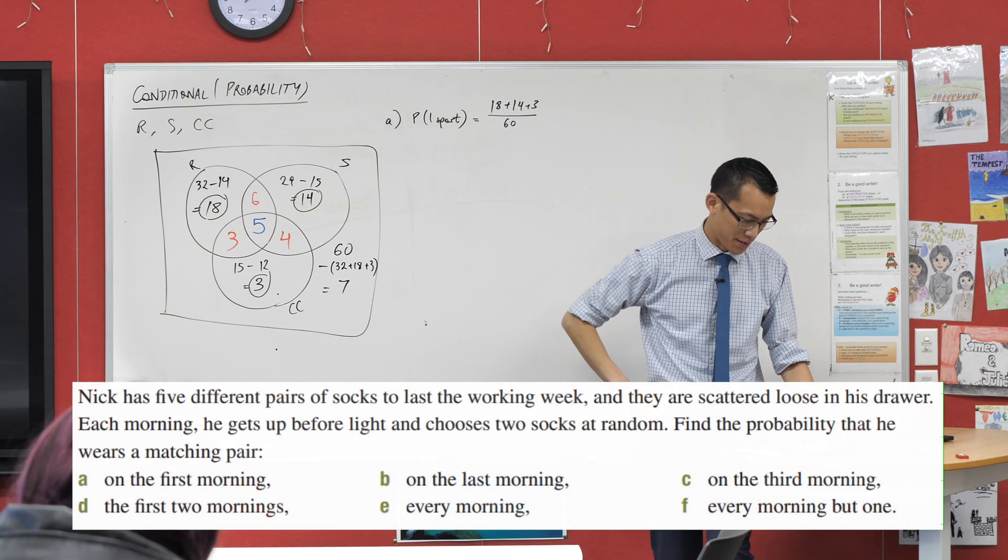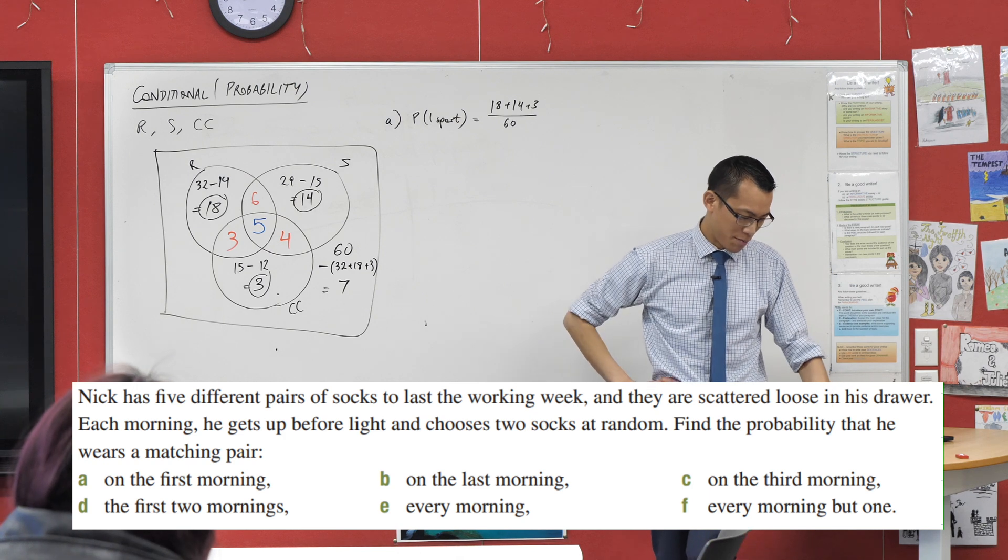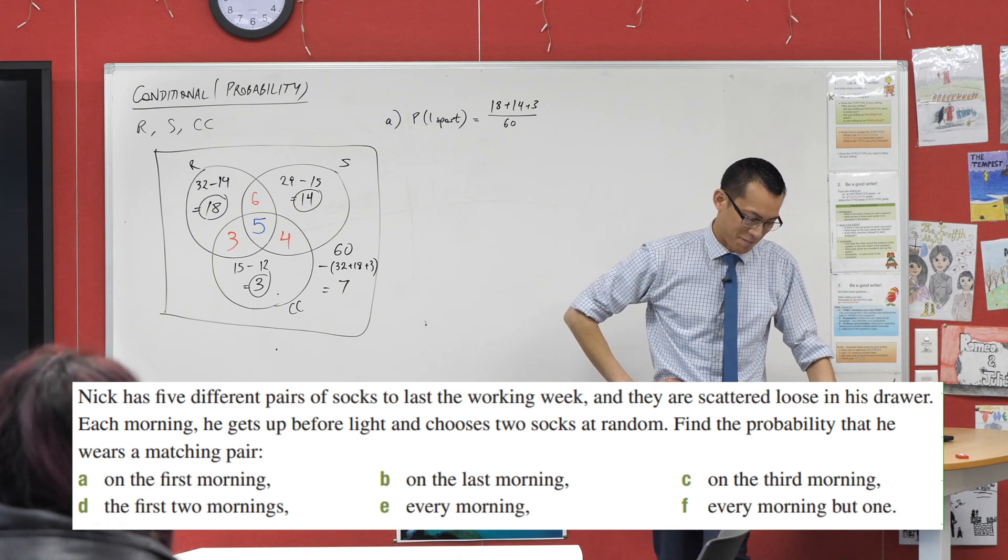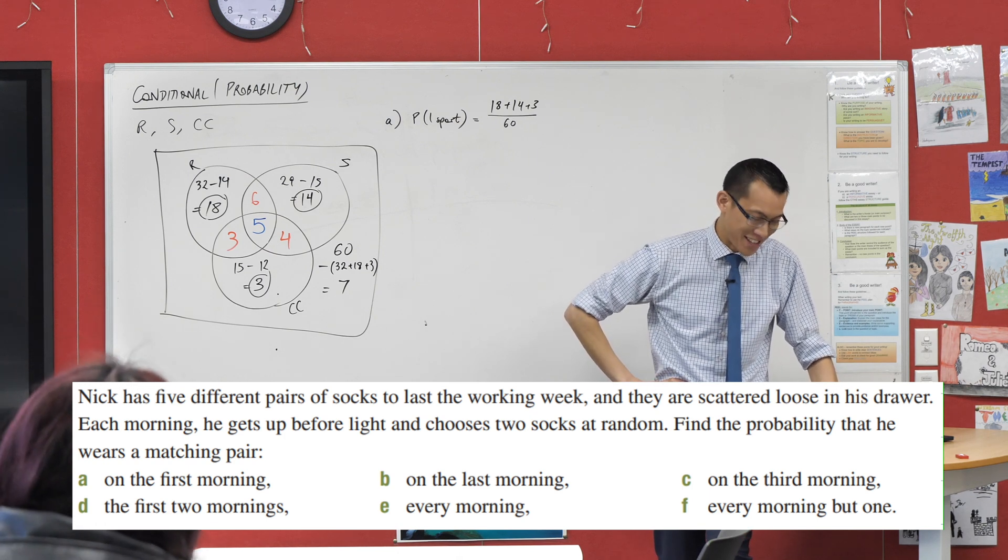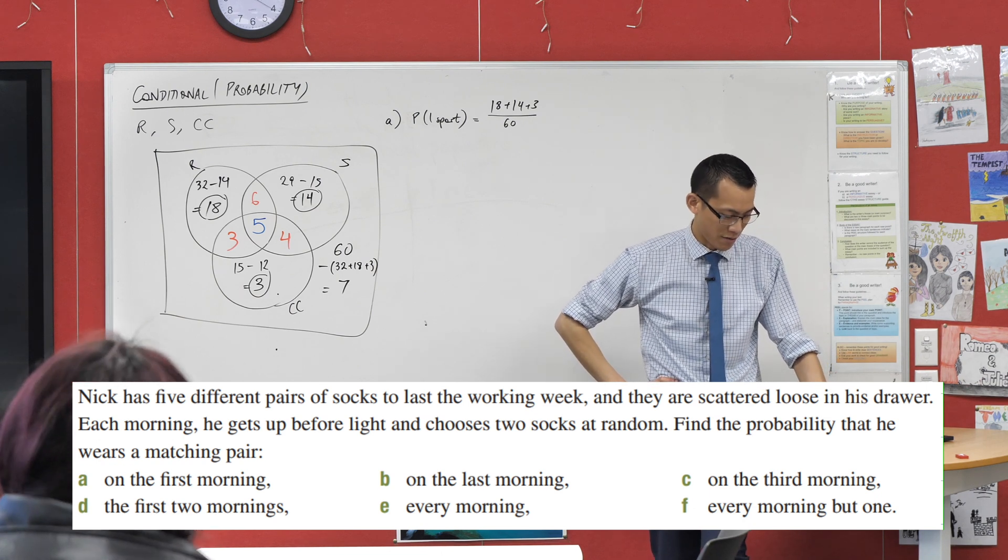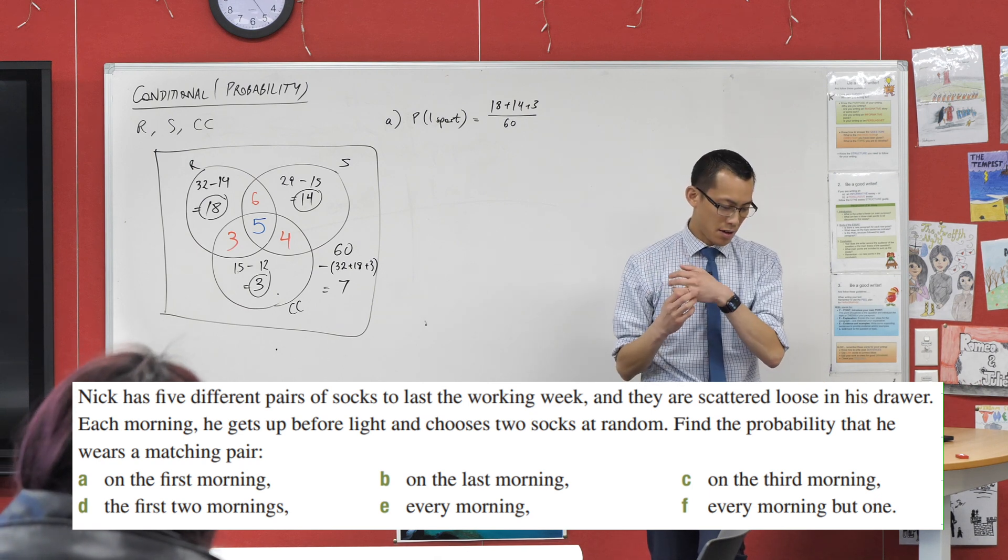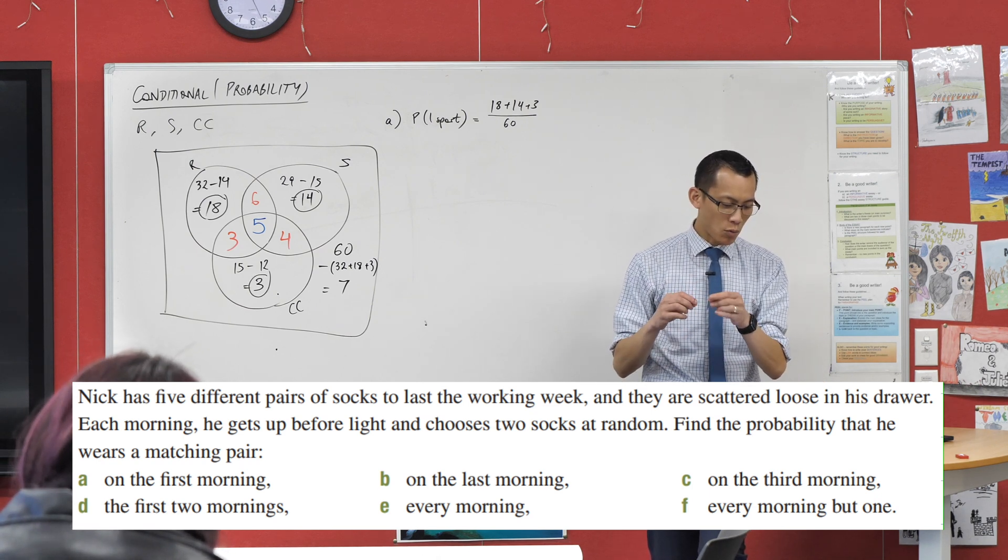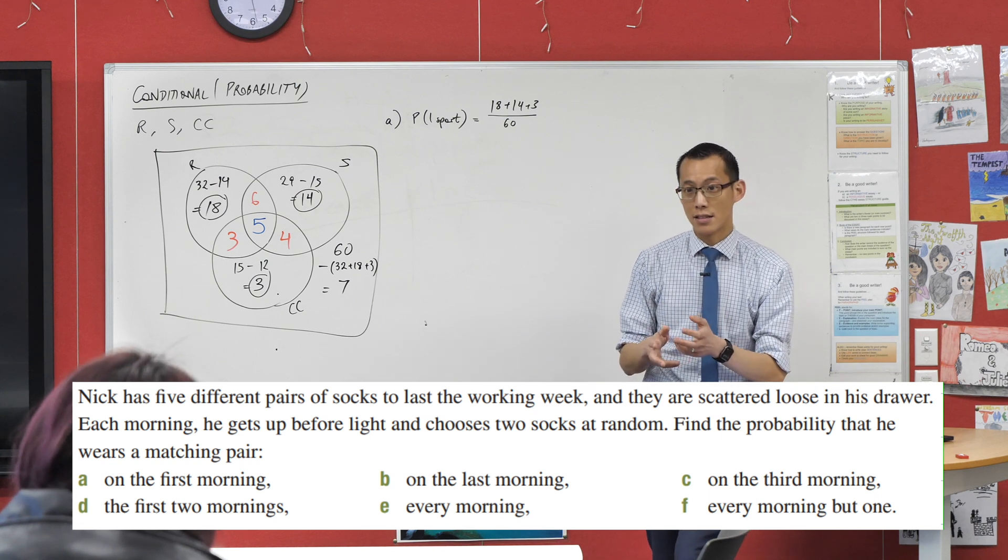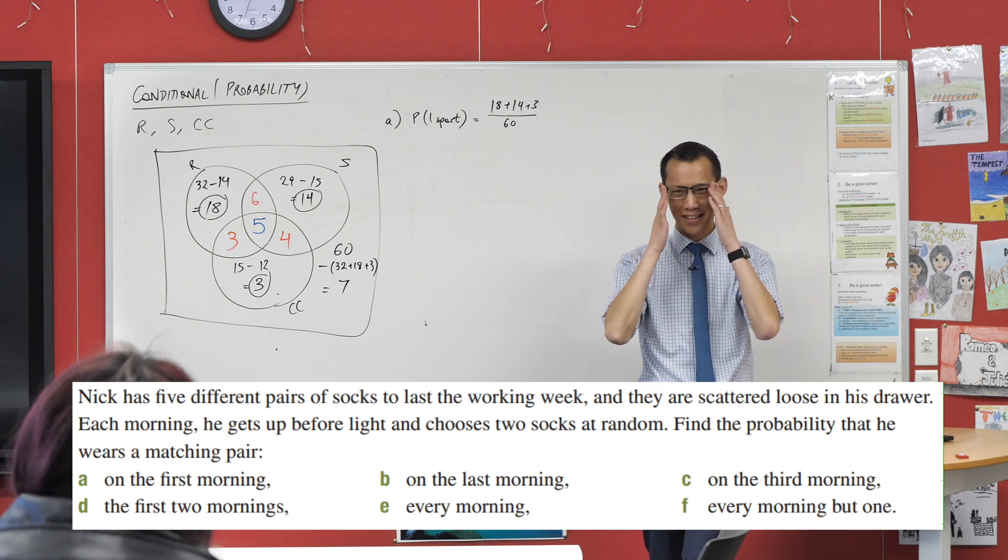It says Nick has five different pairs of socks to last the working week. They're scattered loose in his drawer because he's messy and disorganized. Each morning he gets up before light and chooses two socks at random. Find the probability that... Okay, so here's my question to you first. Was it one of those cases where you had some answers and you're like, doesn't match? Or were you like, I don't even know where to begin with a question like this?